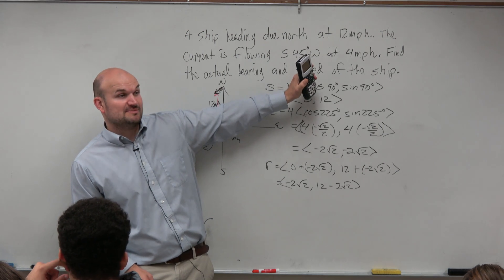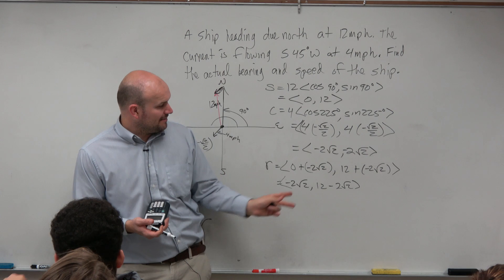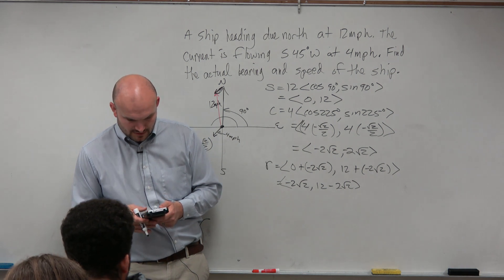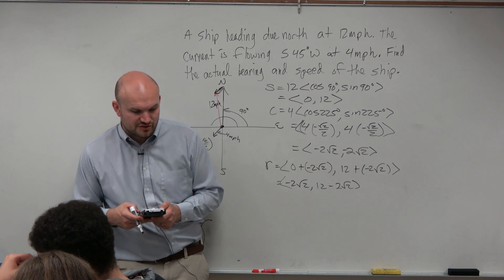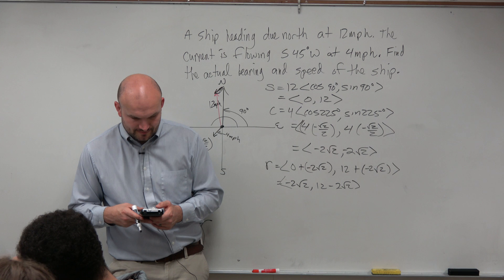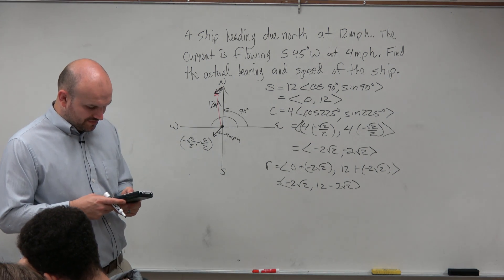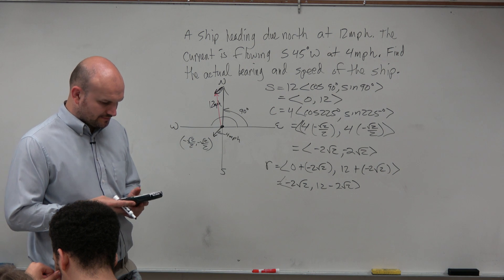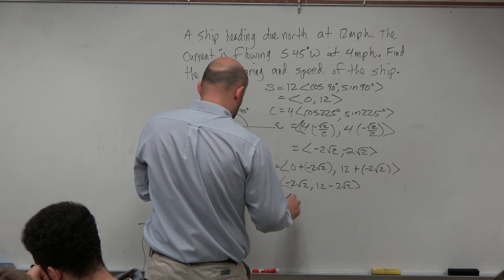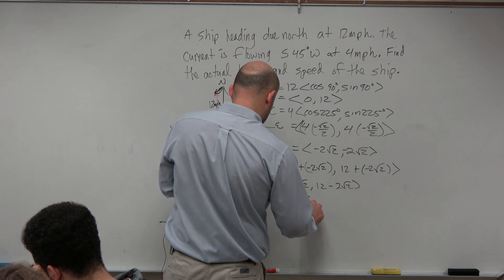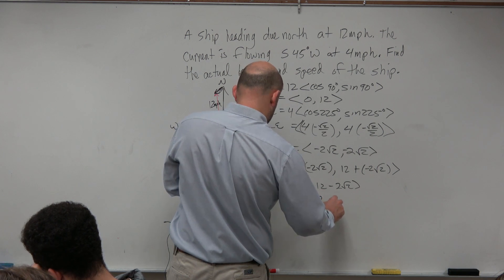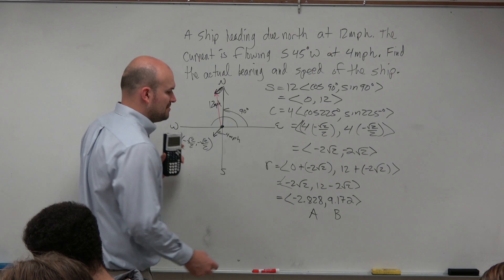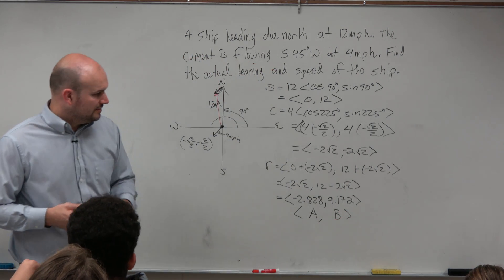However, I'm going to do some calculations. I need to find the actual speed. That means I need to find the magnitude, as well as the direction. So what I'm going to do is I'm going to calculate this, and I'm going to store it. So I'm going to do negative 2 times square root of 2. That gives me negative 2.828. I'm going to store that as alpha A. And then I'm going to do 12 minus 2 square root of 2. And I'm going to store that as alpha B. So when you calculate this, I'm not going to write down all the digits. But I'm storing this as A comma B. And if you need help storing, just let me know.